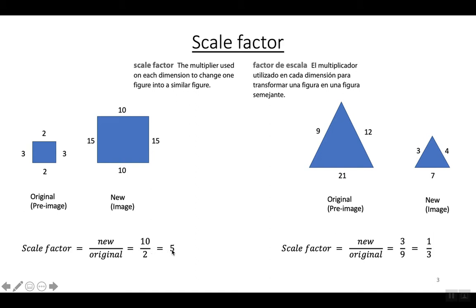For other problems, you're going to have to know which number to put on the top and which number to put on the bottom. So again for scale factor, it's always the new measurement on the top and the original measurement on the bottom. That's important — new on the top, original on the bottom. One thing you could use to remember that is alphabetical order: the letter N comes before the letter O, so N goes on the top and O goes on the bottom.